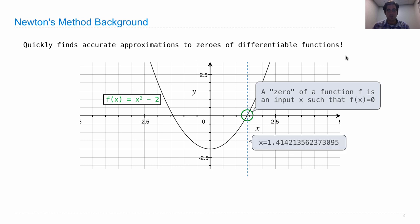And what is that point? Well, it turns out for this function, it is the square root of 2, 1.414.